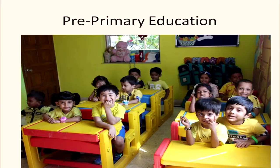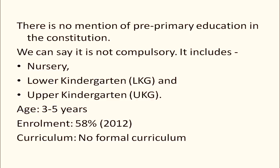Regarding pre-primary education, unfortunately there is no mention of pre-primary education in the constitution. It does not say anything about children below the age of 6 years — it covers 6 years to the age of 14. So there is no compulsion for pre-primary. It includes nursery, lower kindergarten, and upper kindergarten, and the age group in this category is 3 to 5 years. As per data from 2012, enrollment is just 58 percent.